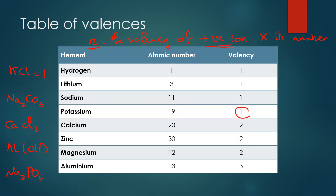For calcium chloride, the valency of calcium is two and we have only one calcium, so the small n equals two. For aluminium hydroxide, the valency of aluminium from the table is three and we have one aluminium, so the small n equals three. For sodium phosphate, sodium's valency equals one but we have three sodium ions, so the small n equals three.